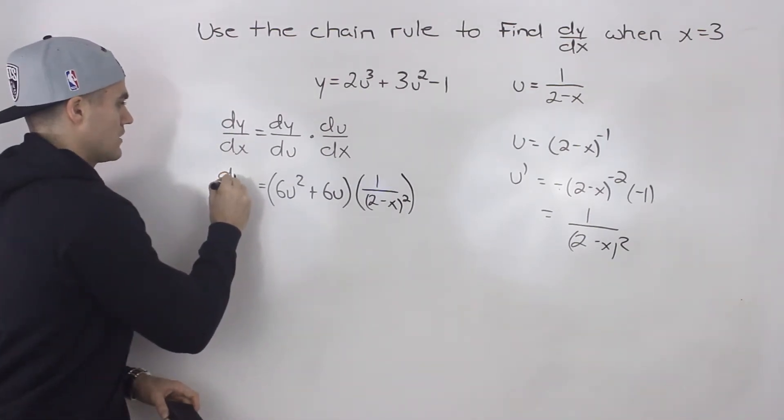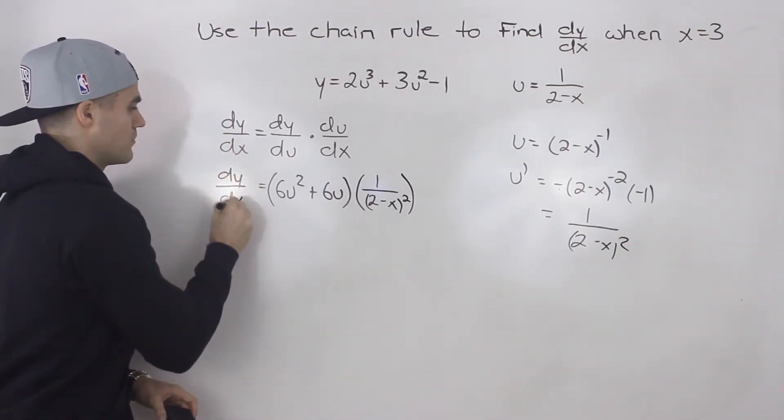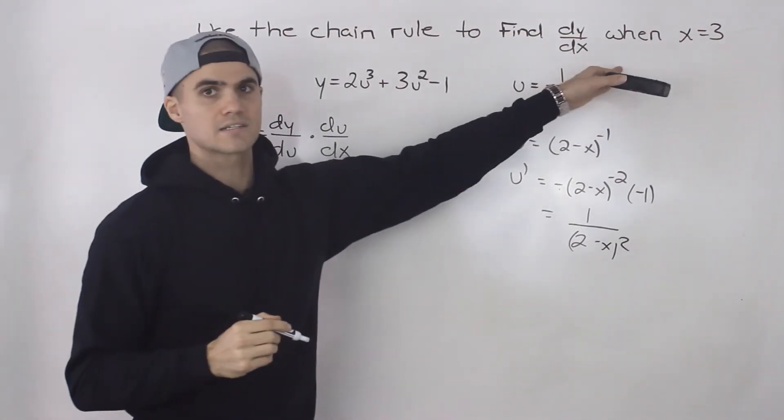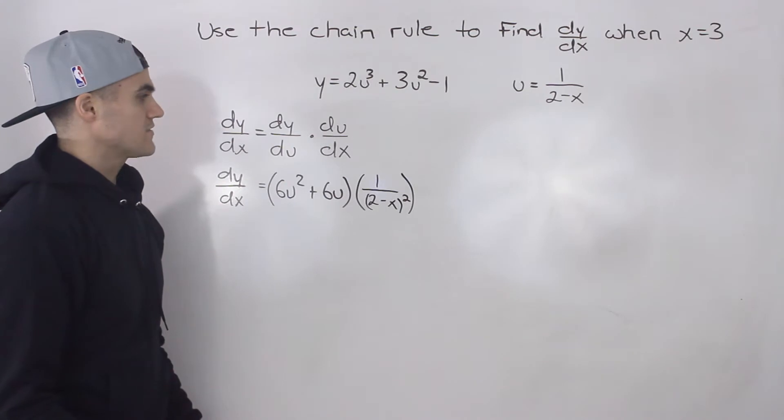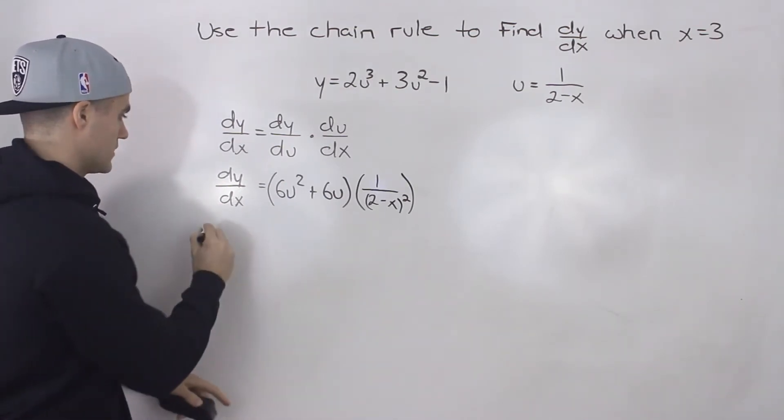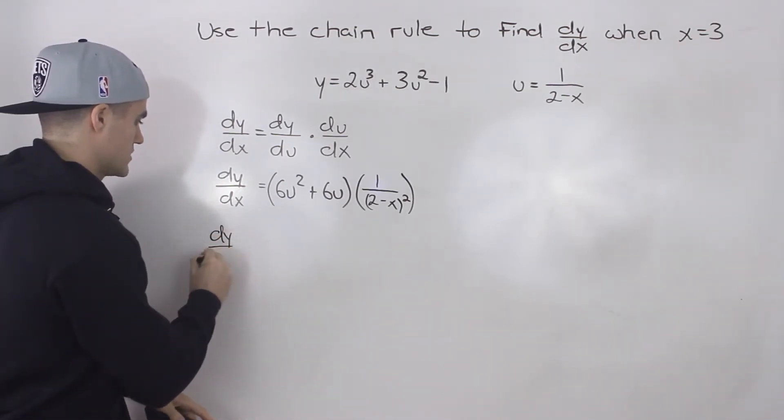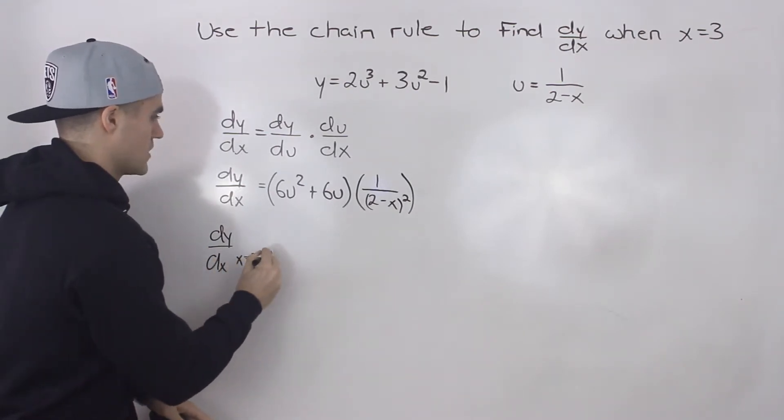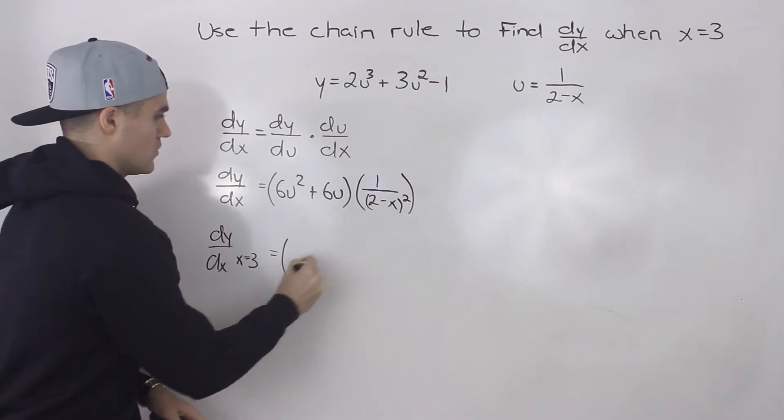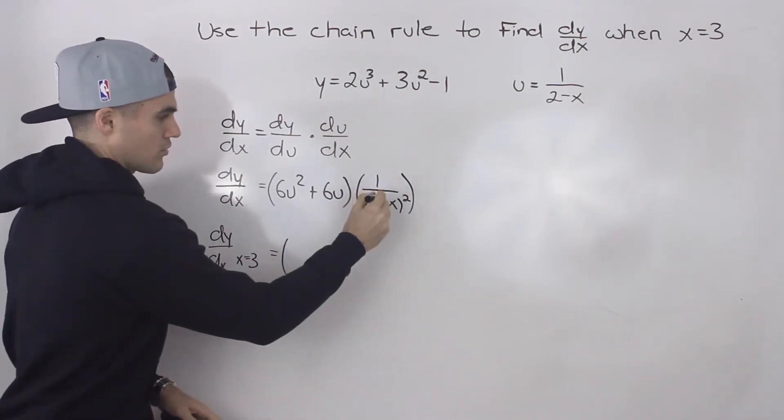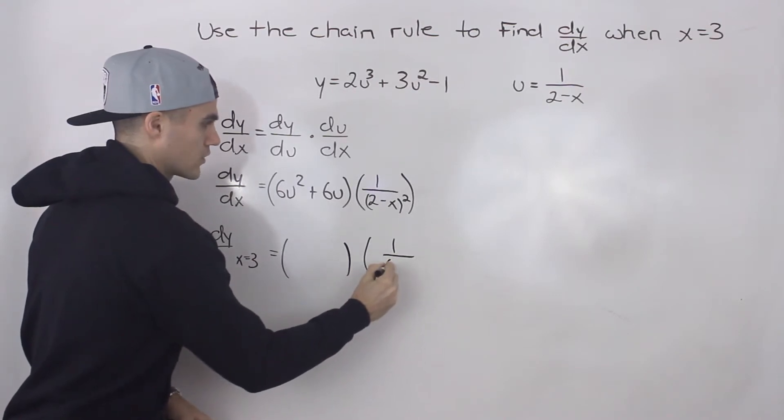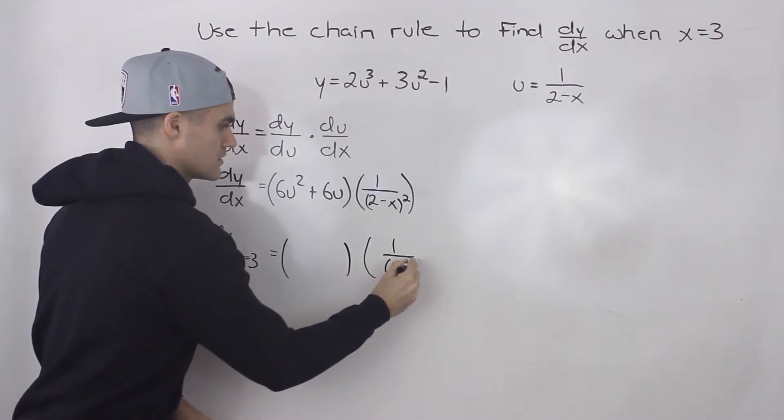So now we got a general expression for dy/dx. But we have to find dy/dx when x is equal to 3. So an x value of 3, notice we could plug it into this bracket. So I'm going to write another line here, dy/dx, and we're doing it for when x is equal to 3.